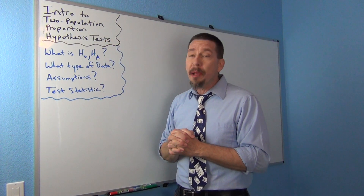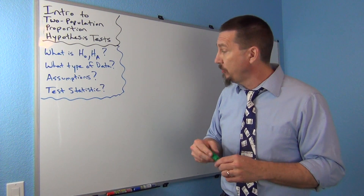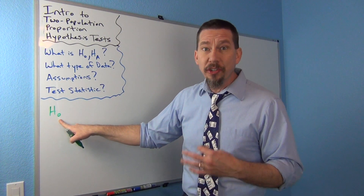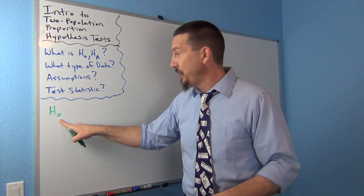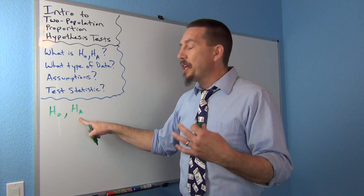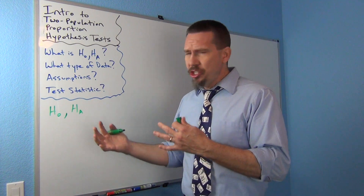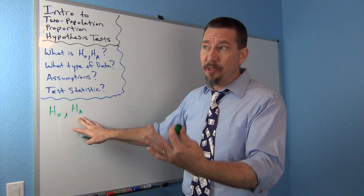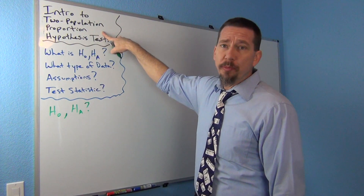So let's start with the null and alternative hypothesis for the two population proportion hypothesis test. H0 is the null hypothesis — a statement about the population that involves equality, usually some kind of equal statement. HA is the alternative hypothesis — a statement about the population that does not involve equality. HA is usually the cause-and-effect or 'it is related' statement, while the null hypothesis is typically 'no effect' or 'not related.' For a two population proportion test, the null hypothesis would be something like pi1 equals pi2, and the alternative might be pi1 is greater than pi2.